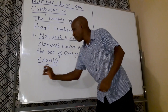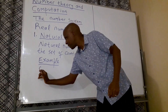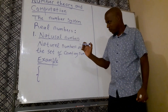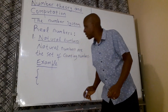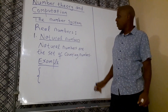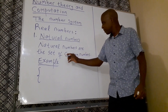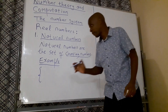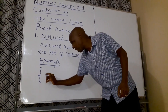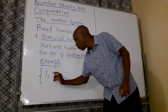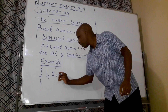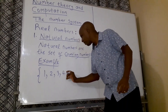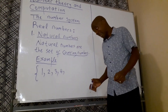Because it's a set, you have to put the curly brace to show the set notation. Now because it comprises counting numbers, you start counting from 1. So it's 1, 2, 3, 4.